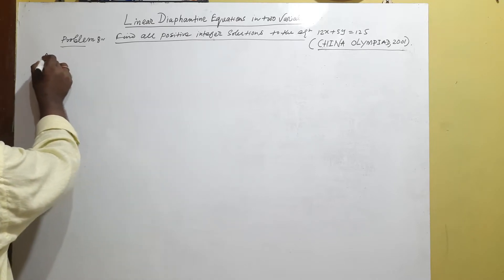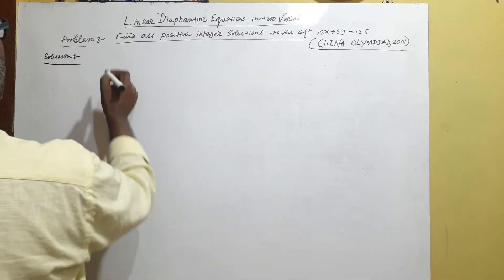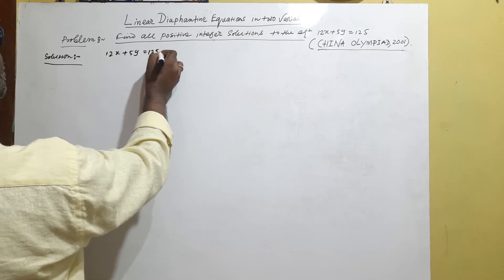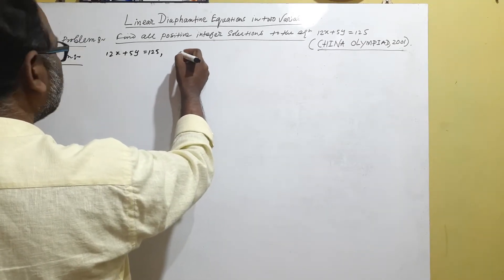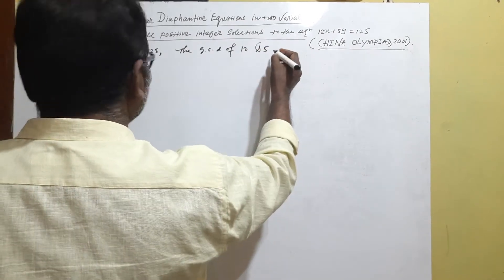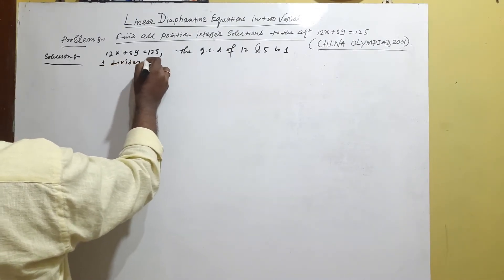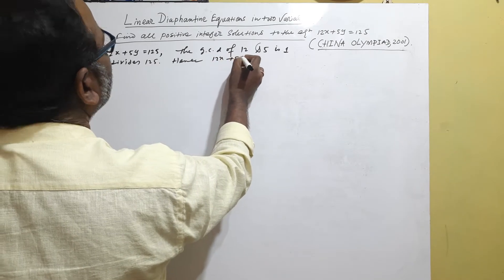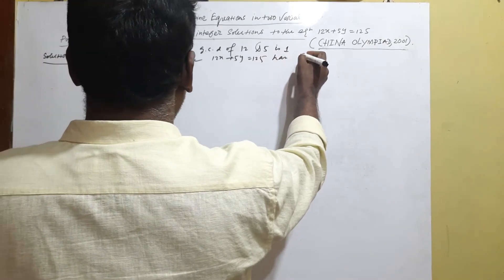The equation is 12x + 5y = 125. Now we find the GCD of 12 and 5. The GCD of 12 and 5 is 1. Since 1 divides 125, the equation 12x + 5y = 125 has an integral solution.